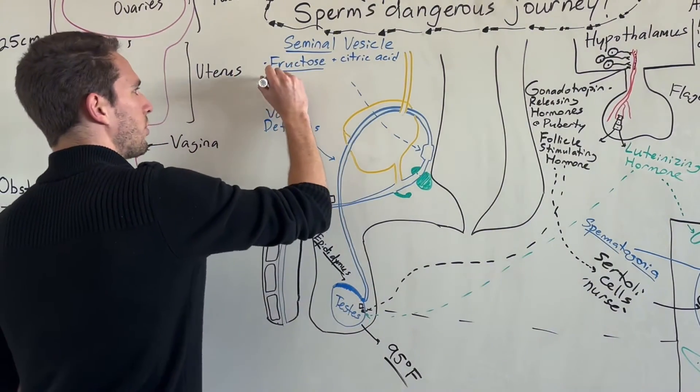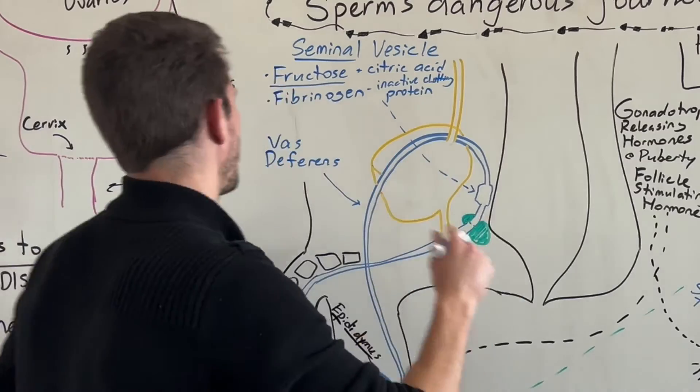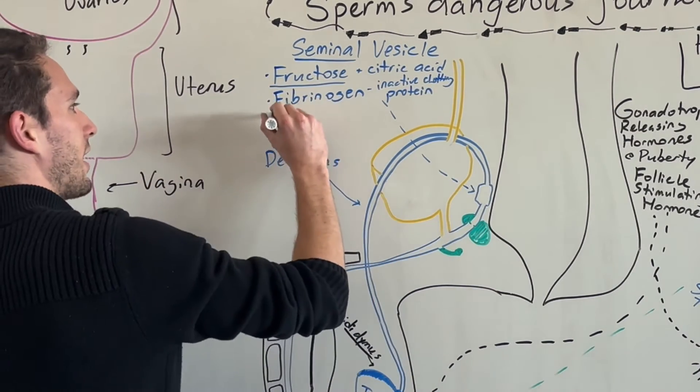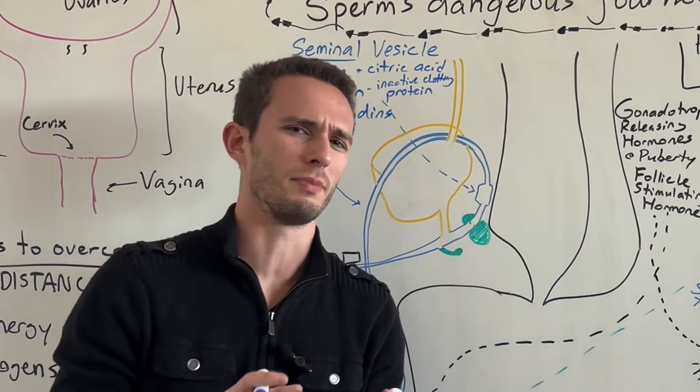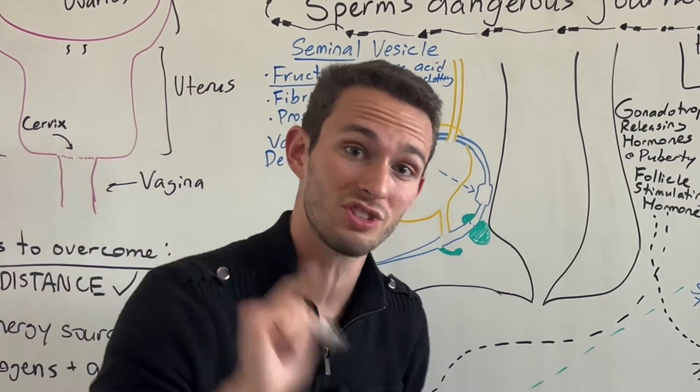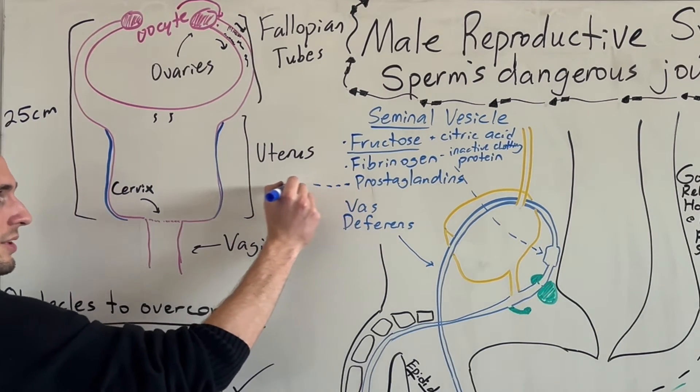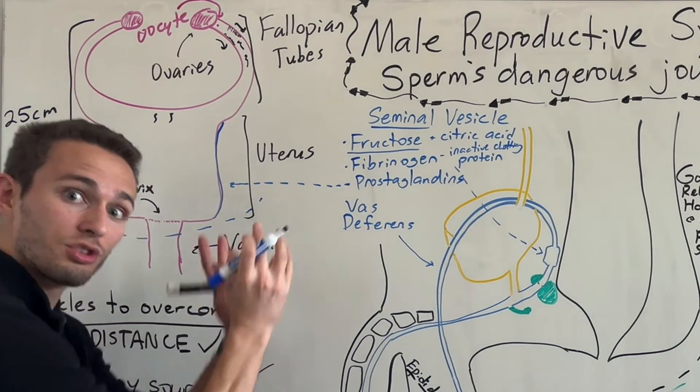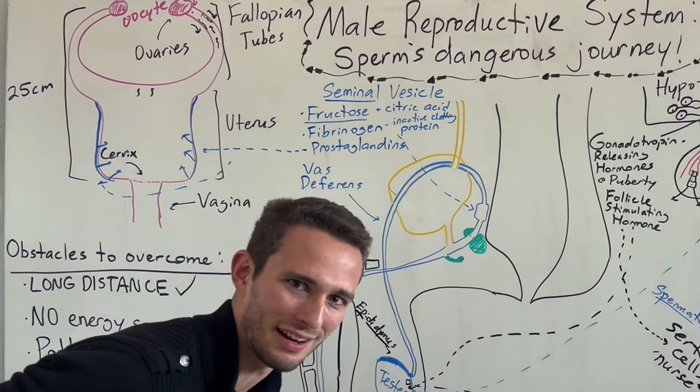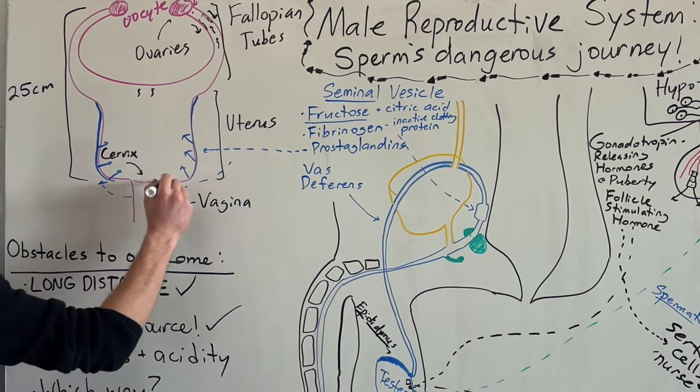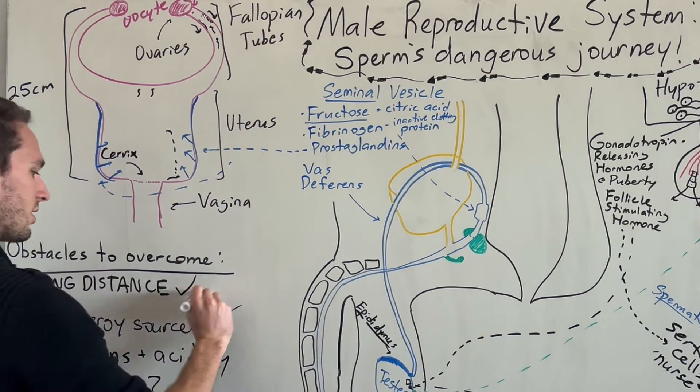As the sperm goes up and around, this guy right here is called the seminal vesicle. This vesicle, this storage area of fluid, has a lot of important things within it. Number one being fructose and citric acid. Your alarm bells should be going off - wait, fructose, that's a sugar, and sugar helps make energy. So this fructose is going to help the mitochondria actually produce ATP for that flagella to whip so the sperm can swim. Citric acid does the same thing, goes into the citric acid cycle, which is right before the electron transport chain, which is right before making ATP.